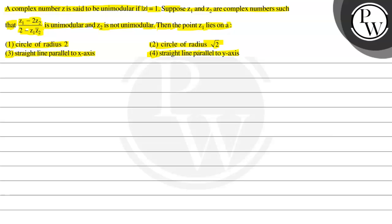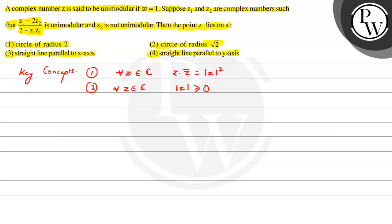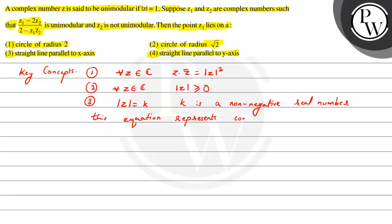Before starting the solution, let's note down the key concepts for this problem. First key concept: for any complex number z, z times z conjugate is equal to mod z squared. Second key concept: for any z in complex numbers, modulus of z is always greater than or equal to 0. Third concept: the equation mod z is equal to k, where k is a non-negative real number.